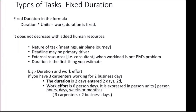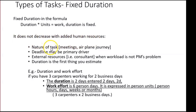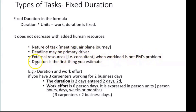So what is fixed duration? In the formula Duration × Units = Work, duration is fixed — it does not decrease with added human resources. There are instances when that is relevant, for example the nature of the task: meetings, airplane journeys — it doesn't matter how many people are on the plane, the duration is the same. A deadline may be the primary driver. Duration is the first thing you should estimate in these instances.